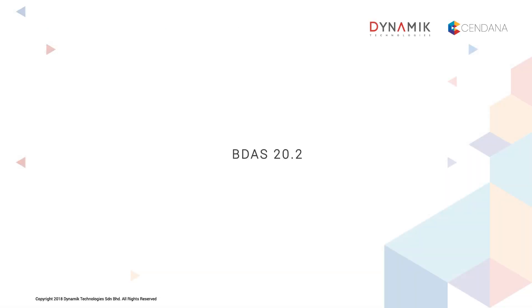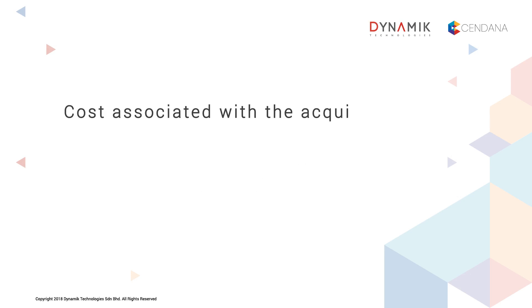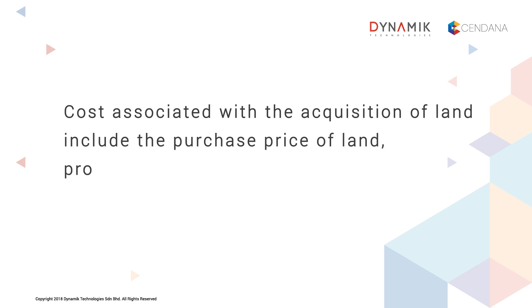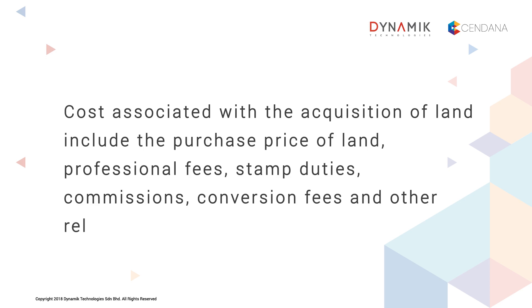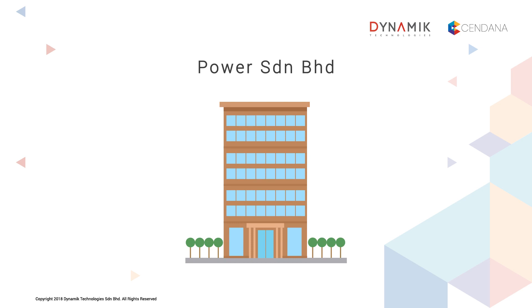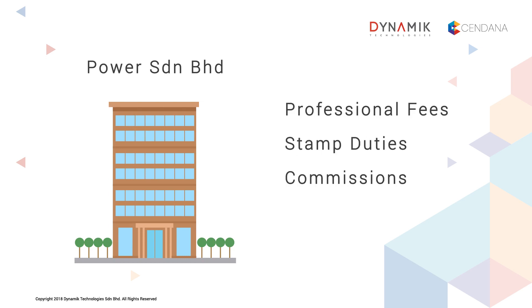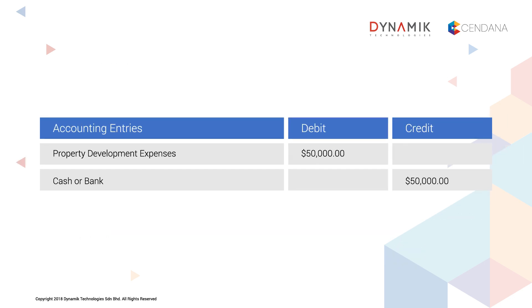Moving on, BDAS20.2 is to record property development expenses. These are defined as costs associated with the acquisition of land, including the purchase price of land, professional fees, stamp duties, commissions, conversion fees, and other relevant levies. For example, Power Sandiran Berhad incurred pre-acquisition costs associated with the acquisition of land — including professional fees, stamp duties, commissions, conversion fees, and other relevant levies — totalling $50,000. The accounting entries for this vendor bill transaction will be: debit the account for property development expenses with $50,000, and credit cash or bank with the same amount.